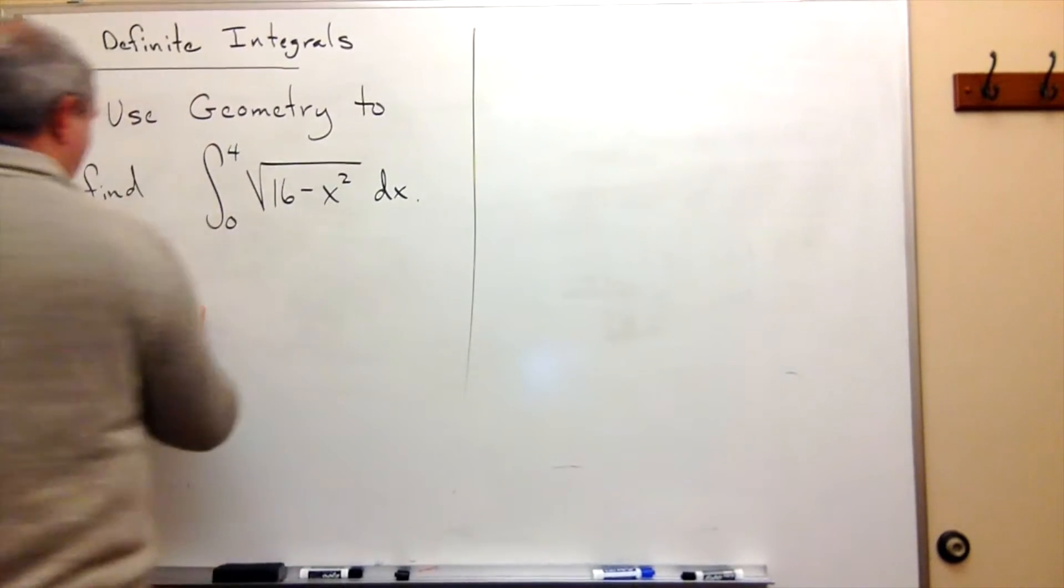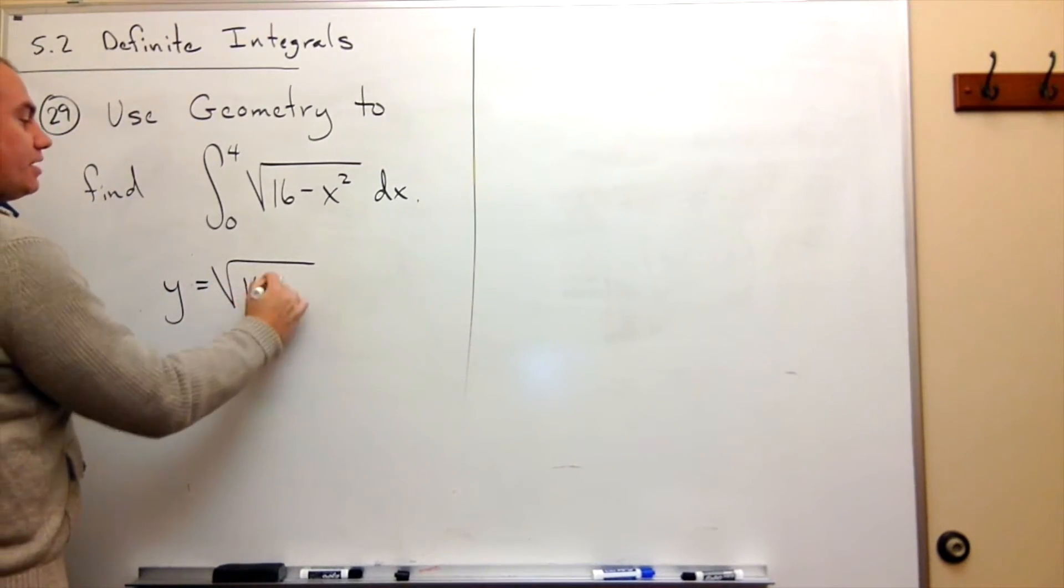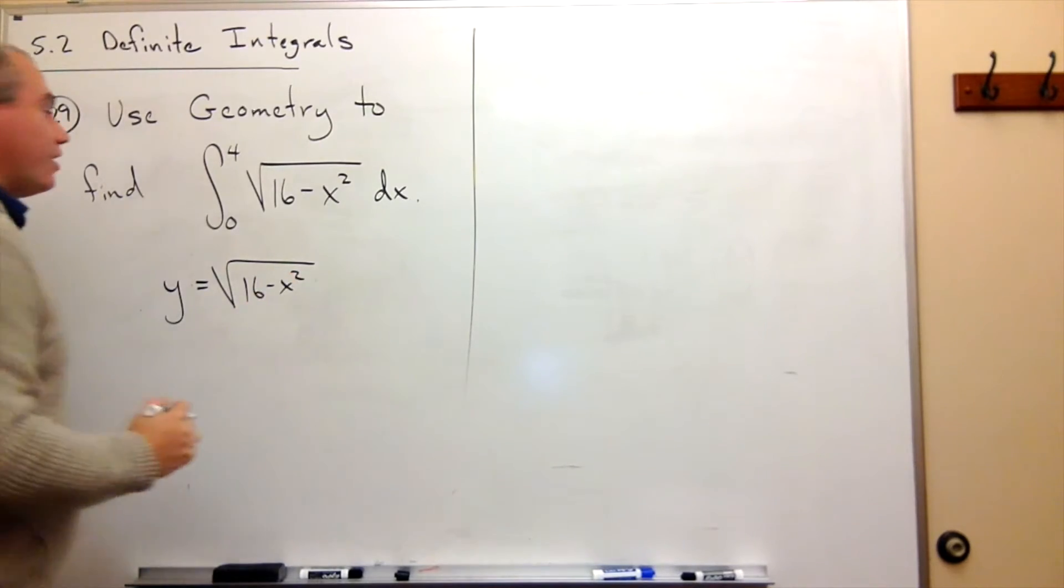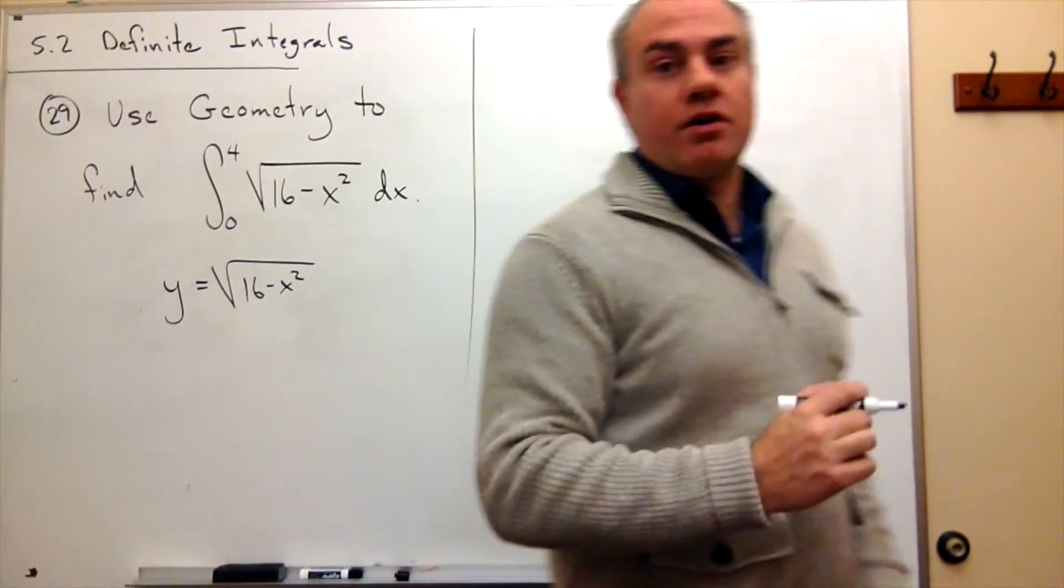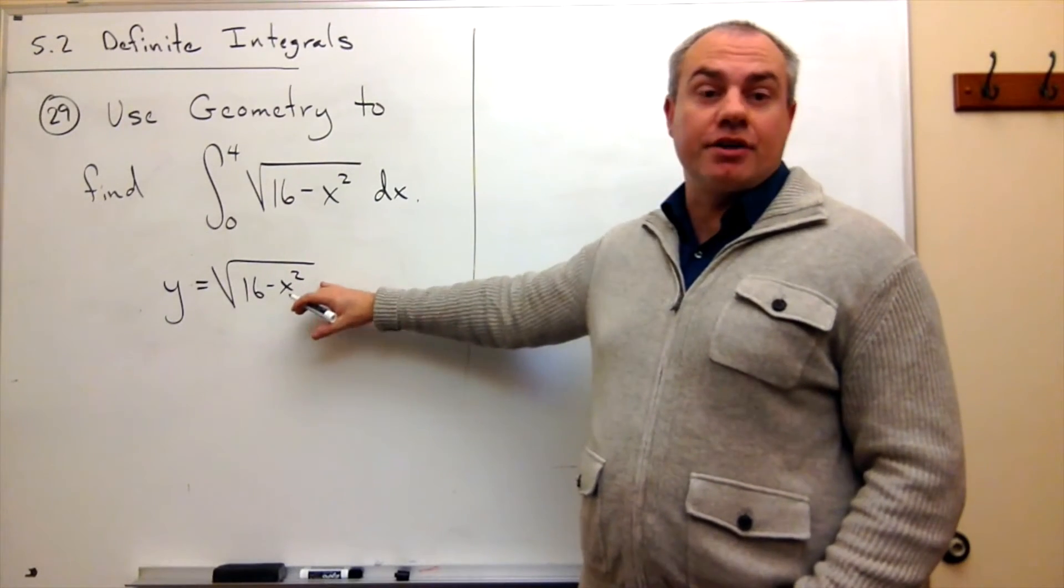How much area is there under the curve y equals the square root of 16 minus x squared between 0 and 4?